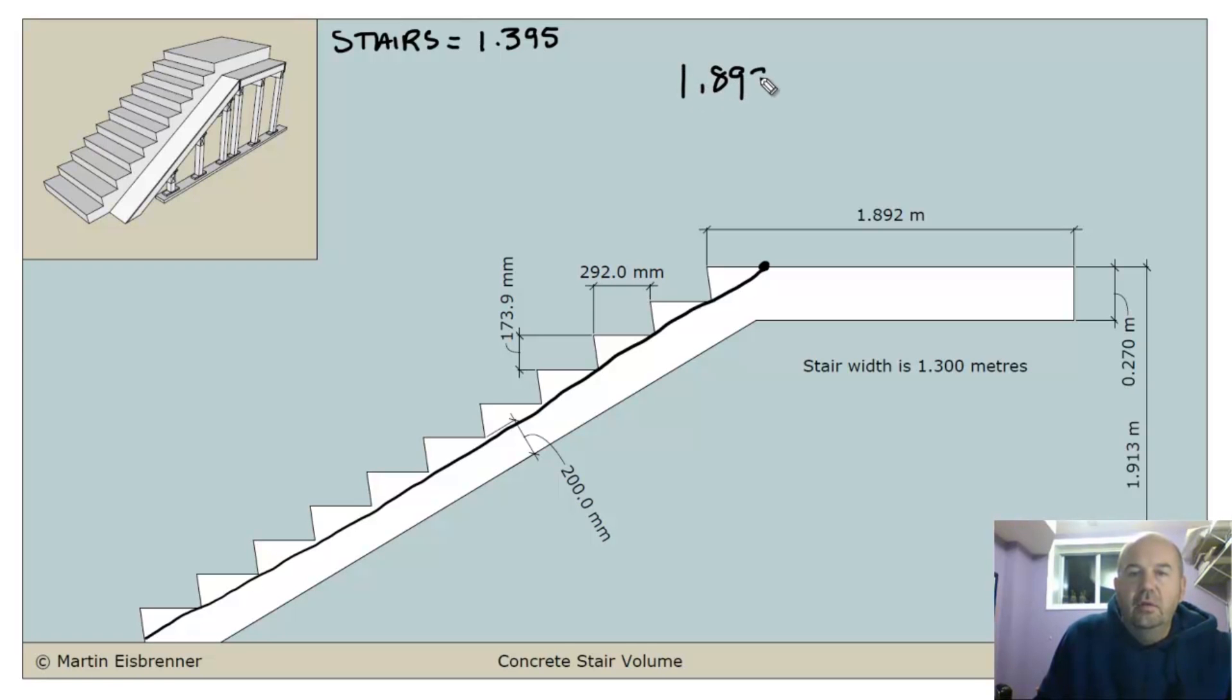1.892. I'm going to subtract 1 unit of run. This guy here. Minus 0.292. That's this distance right here. I'm going to take it off, so that I'm left with this landing. Like that.